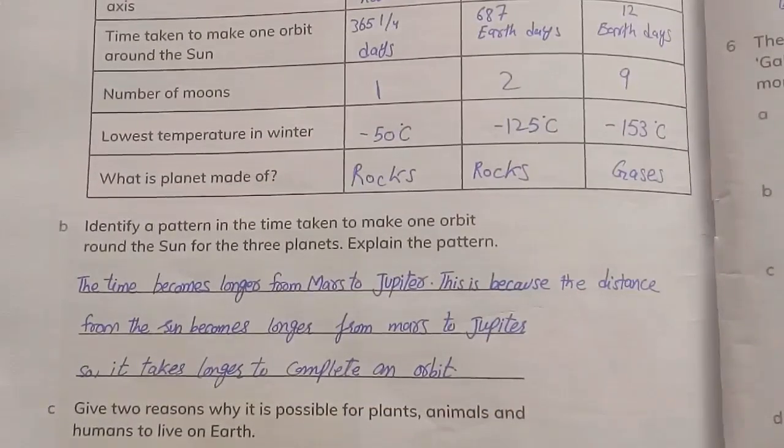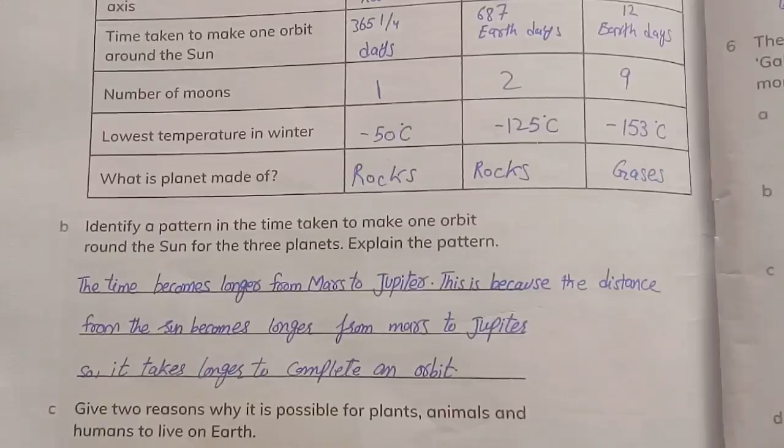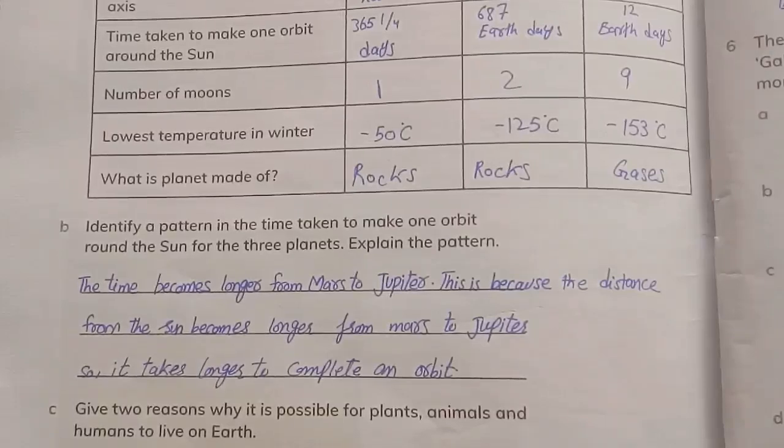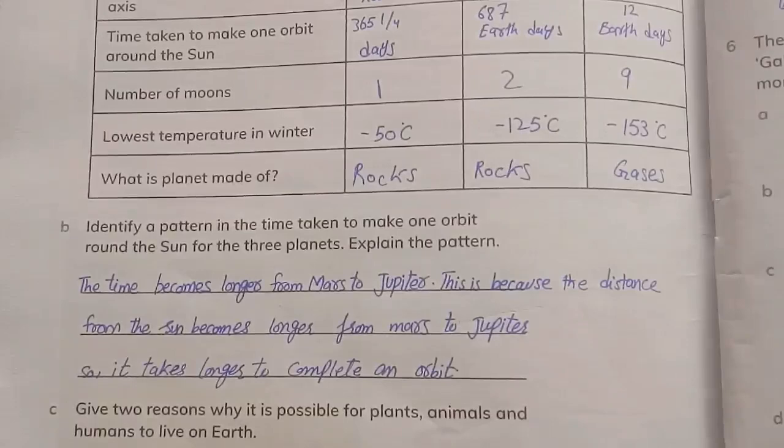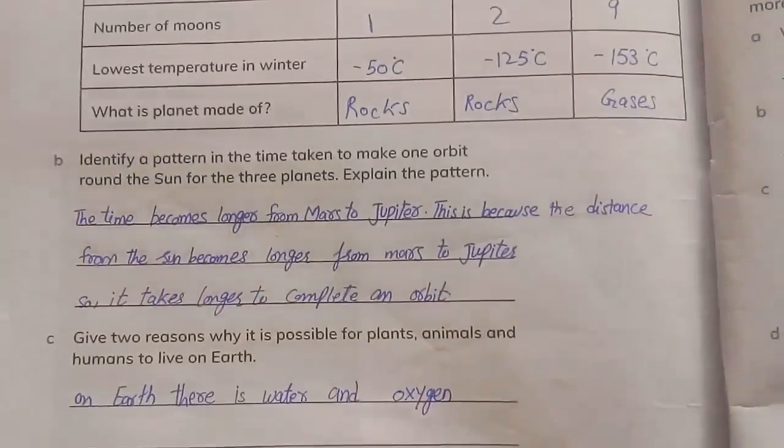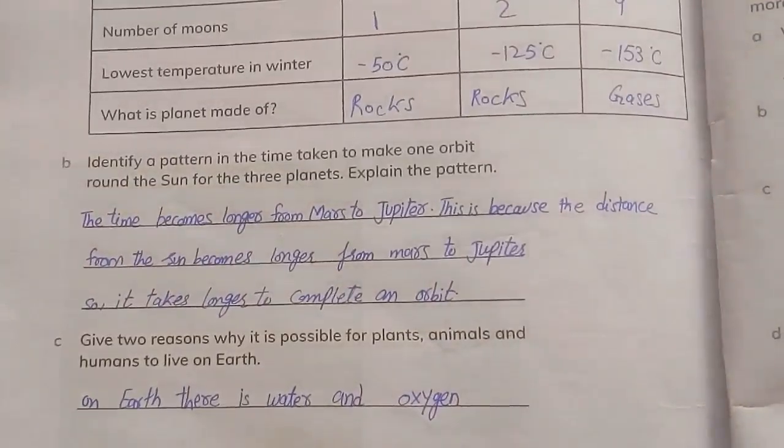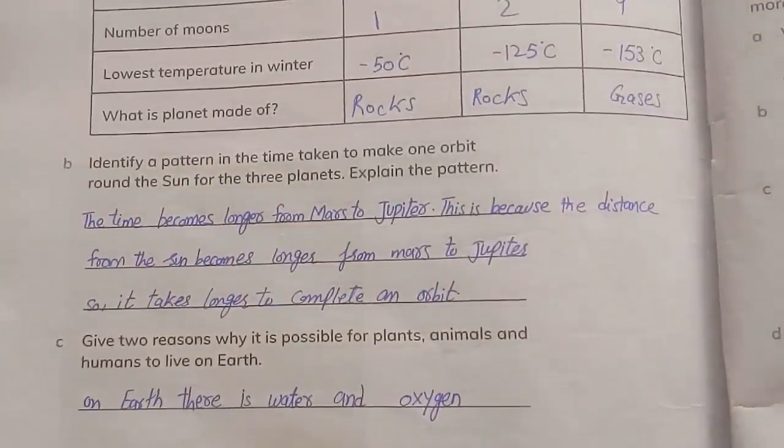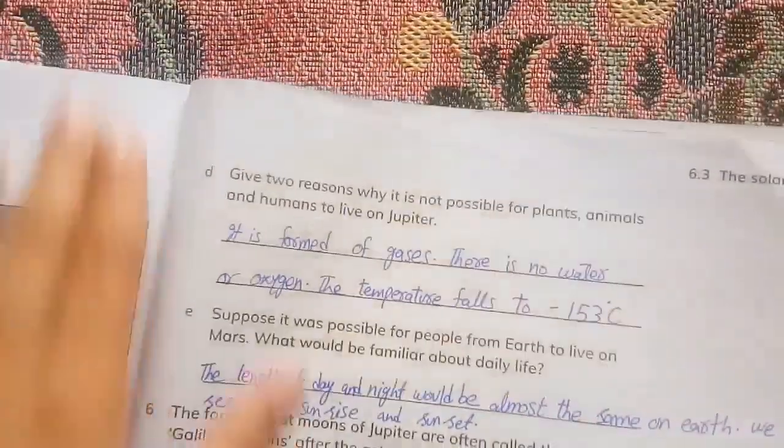Part B: Identify a pattern in the time taken to make one orbit around the Sun for the three planets. Explain the pattern. The time becomes longer from Mars to Jupiter. This is because the distance from the Sun becomes longer from Mars to Jupiter, so it takes longer to complete an orbit. Give two reasons why it's possible for plants, animals, and humans to live on Earth. On Earth there is water and oxygen.